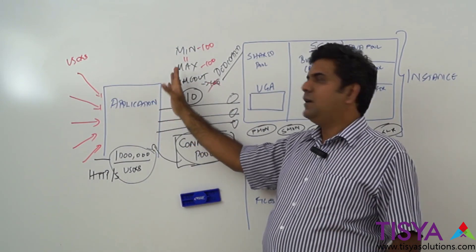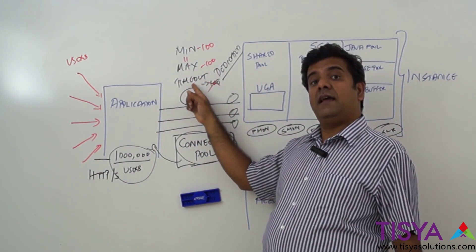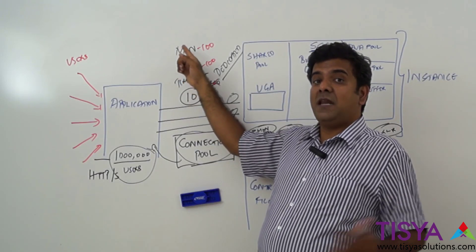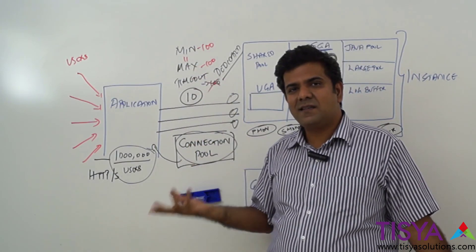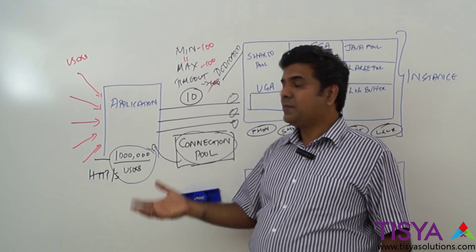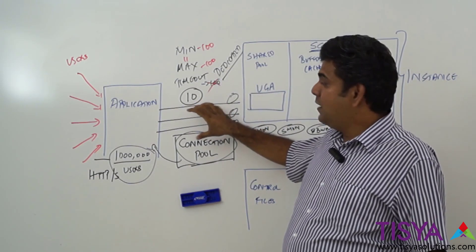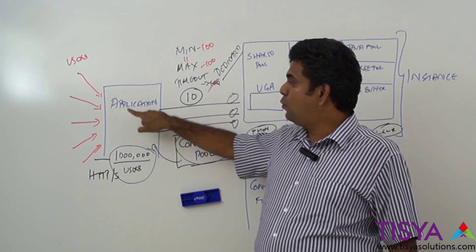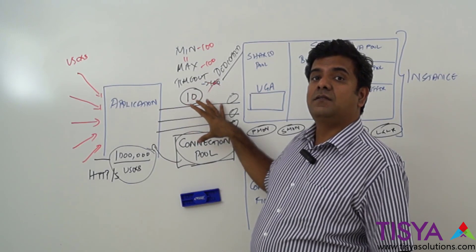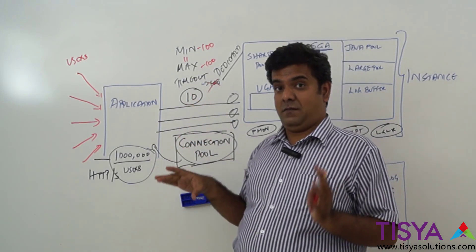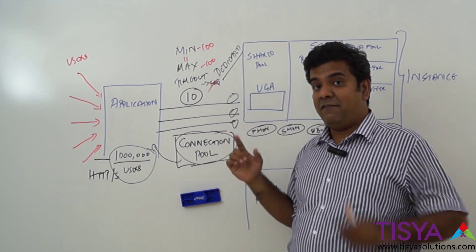A good practice for Oracle database connections is to set the minimum connection equal to the maximum connection — for example, both set to 100 — and to not use a timeout. Benchmark your application based on expected user load, pre-establish the connections, and leave them. Don't let the pool shrink and grow by setting a timeout. Set your connection pool large enough so that application requests never have to wait for a free connection.